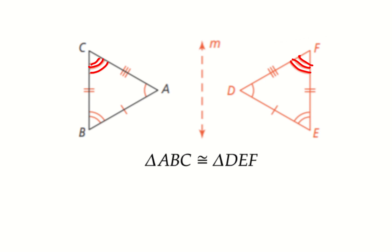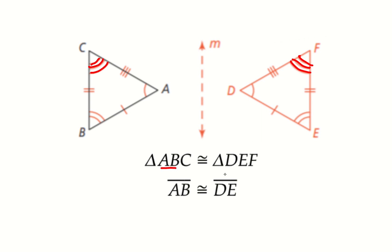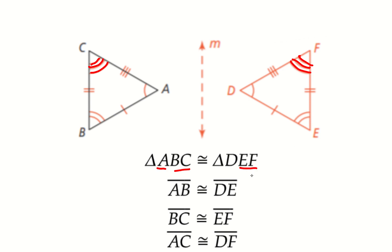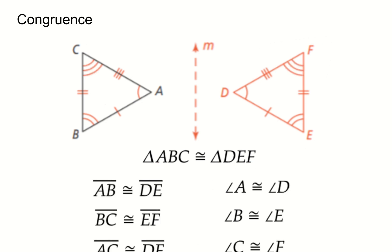This is known as a congruence statement, and the letters are intentional: A maps to D, B maps to E, C maps to F. From this congruence statement we can identify more congruent statements: AB is congruent to DE, BC is congruent to EF, and AC is congruent to DF. Any combination must follow the same order. Similarly for angles: angle A is congruent to angle D, angle B is congruent to angle E, and angle C is congruent to angle F. From any congruence statement for a triangle, you can make six congruent statements.